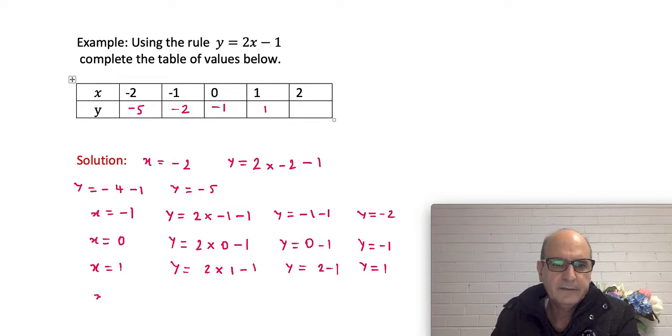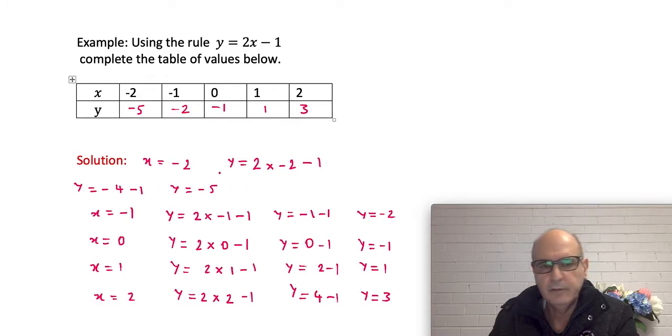The last one is x equal to 2. So y equals 2 times 2 minus 1, and that gives us y equal to 4 minus 1, which is 3. So I write 3 here for my y value.